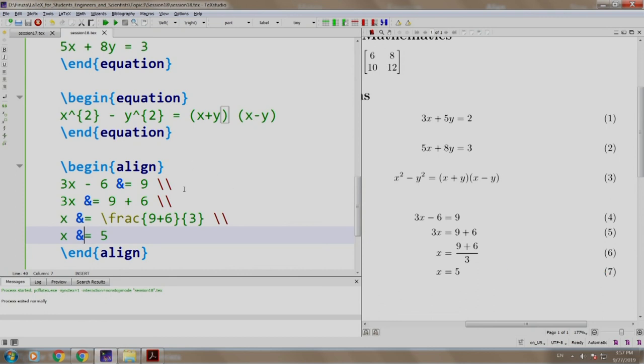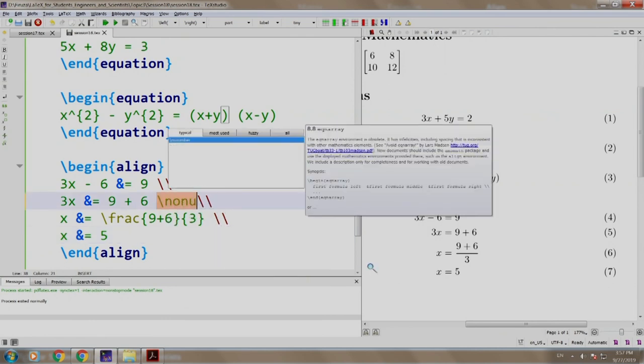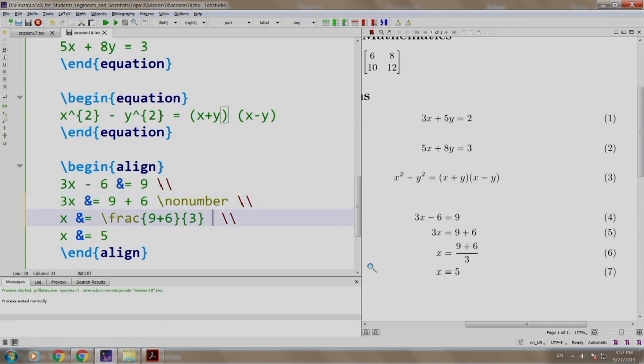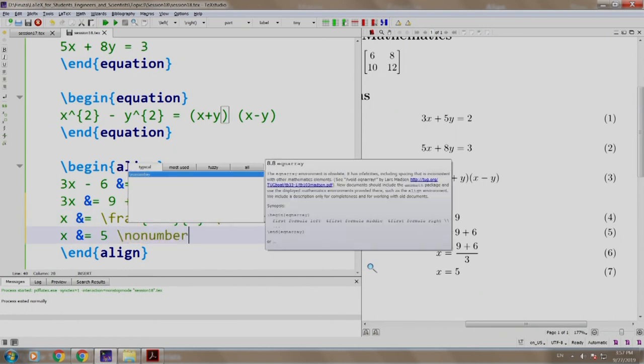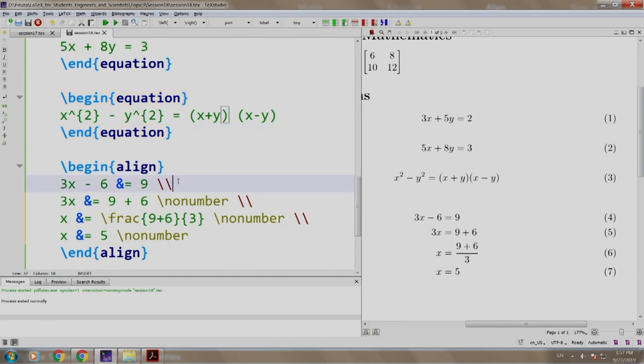We write slash no number in the remaining three lines. Let us build and run. Only the main equation is numbered. This is how we write equations that span multiple lines. Let us go back to our slides.